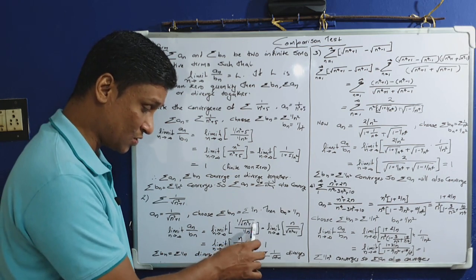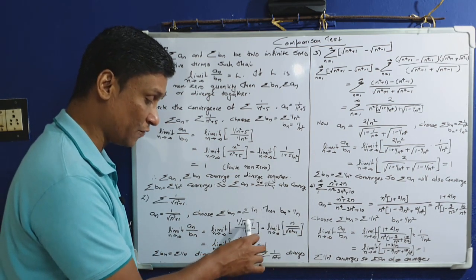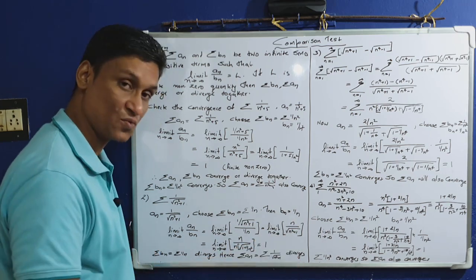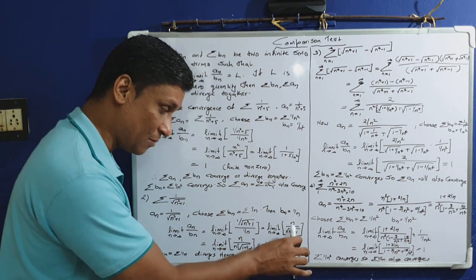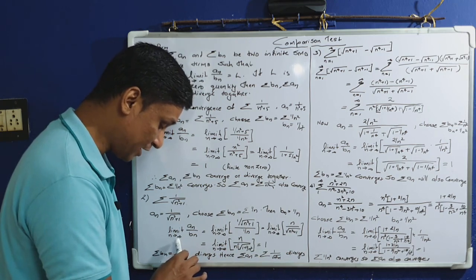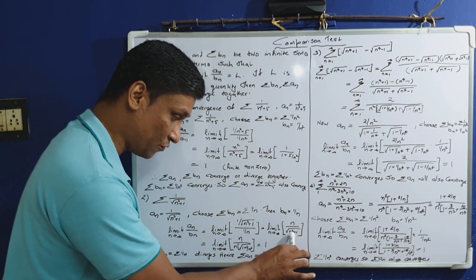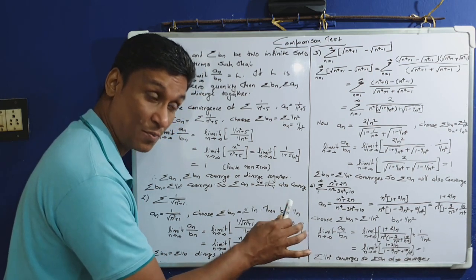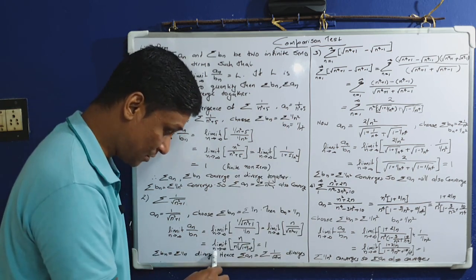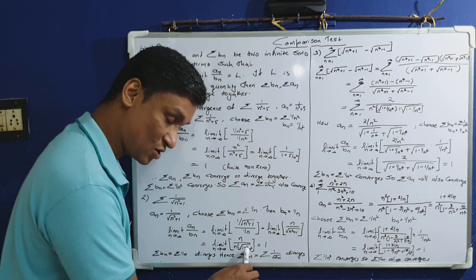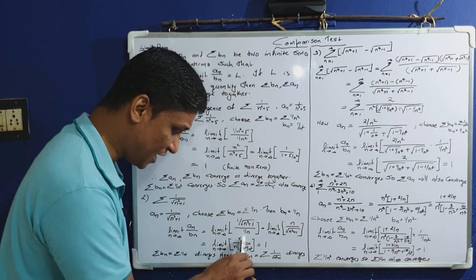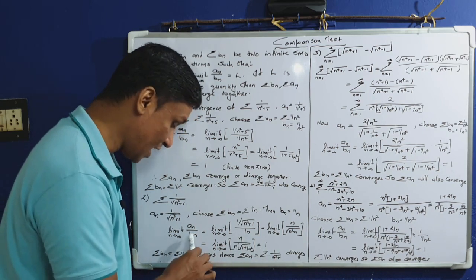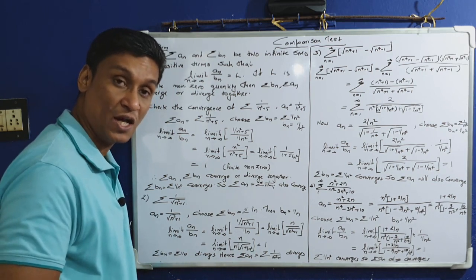Limit n tends to infinity of (1/√(n²+1)) divided by (1/n) equals limit n tends to infinity of n divided by √(n²+1). Taking n² outside the square root: limit n tends to infinity of n divided by [n times √(1 + 1/n²)], which simplifies to limit n tends to infinity of 1 divided by √(1 + 1/n²), giving the result 1.